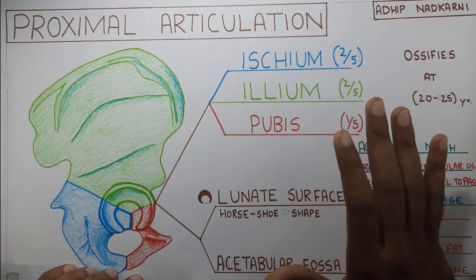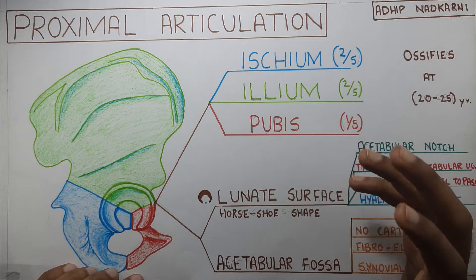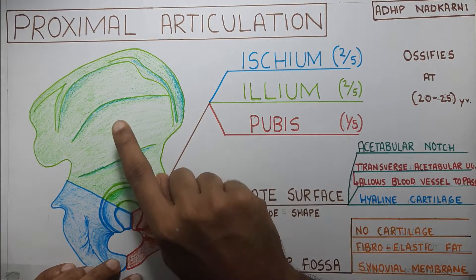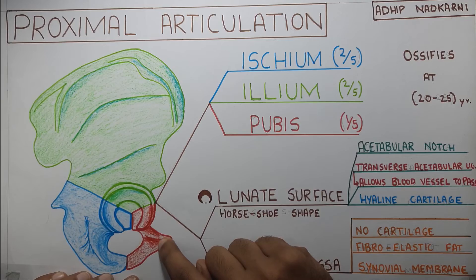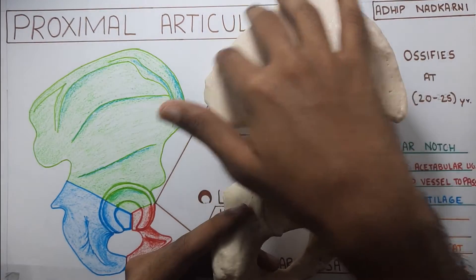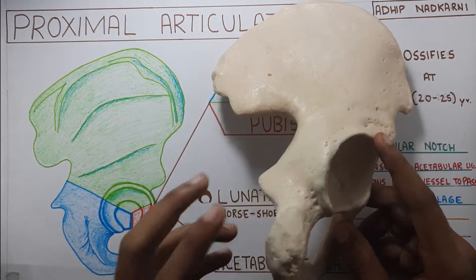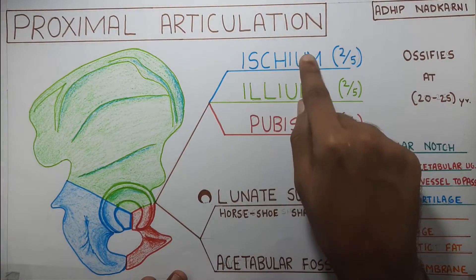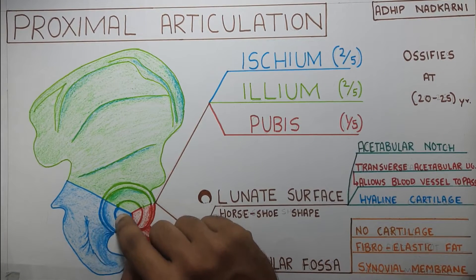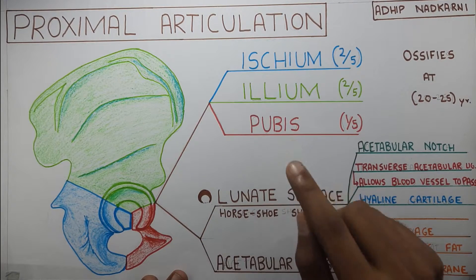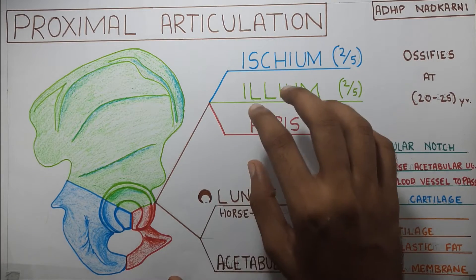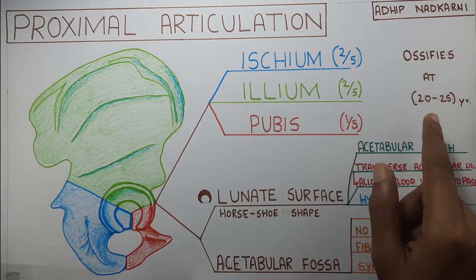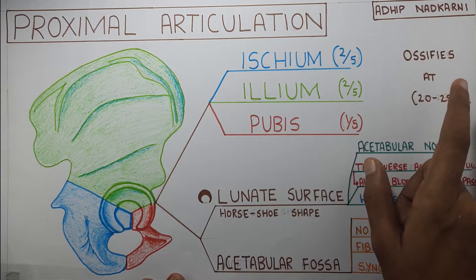The proximal articulation is your acetabulum, which is formed by three bones: your ileum, your ischium, and your pubis. The ileum and ischium each make two-fifths of your acetabulum, and one fifth is made by your pubis. These three bones ossify at a very late age, around 20 to 25 years. This is an important point which can come up in an MCQ.